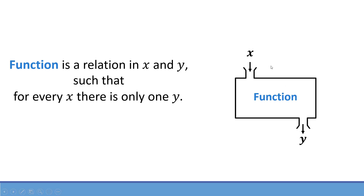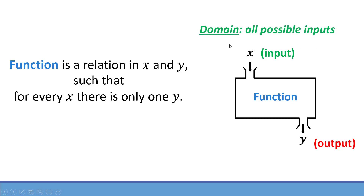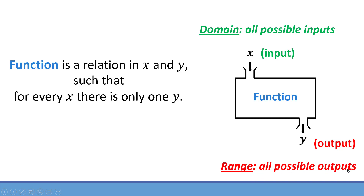Values that go in the box are called inputs of the function, and the values of y that come out of this box are called the outputs of a function. There are two more important definitions associated with the function. The first one is the domain of a function — domain represents all possible inputs, all possible values of x that we can put into the function. And another one is the range of a function, which represents all possible outputs of a function.